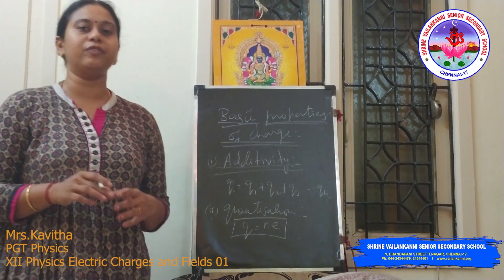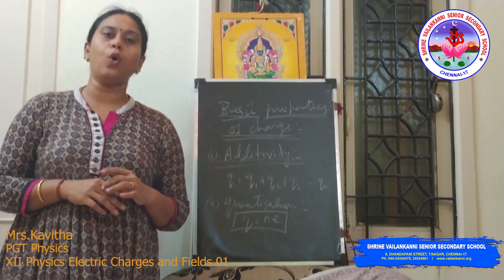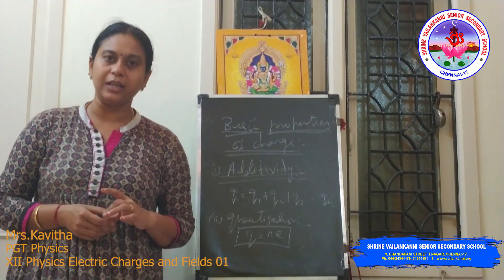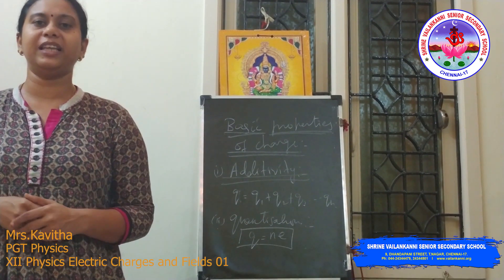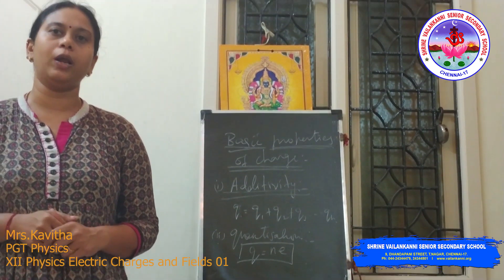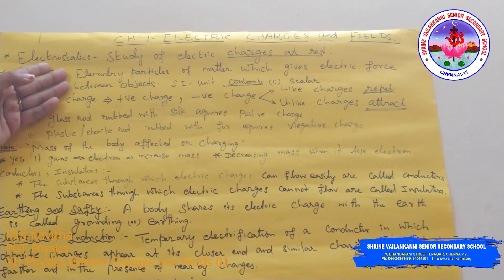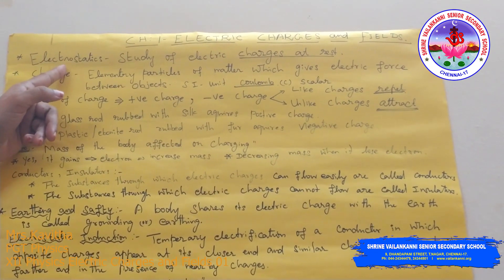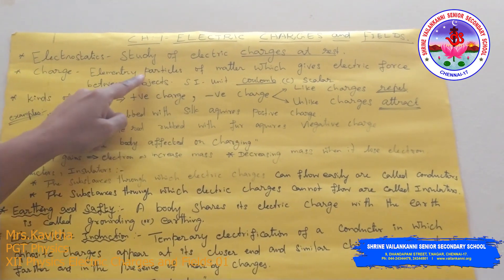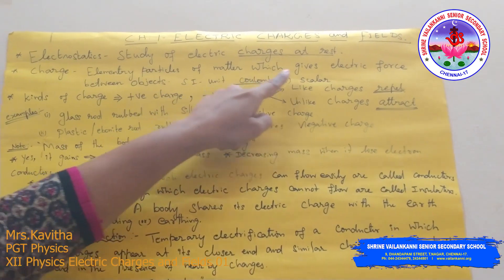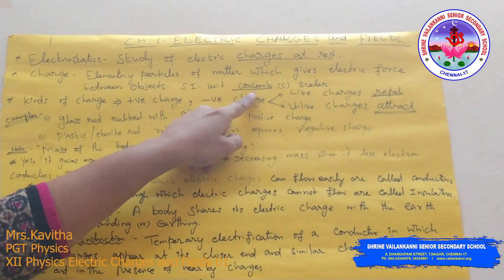The third property is conservation. Conservation of charge means the total charge of an isolated system remains constant — charge can neither be created nor be destroyed. Now let's recap. Electrostatics is the study of electric charges at rest. Charge is the elementary particle of matter which gives electric force between objects. The SI unit is Coulomb; it is a scalar quantity.